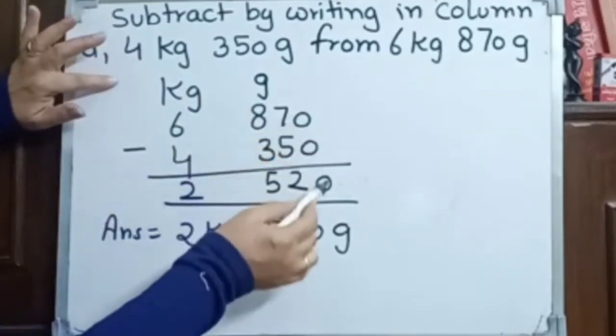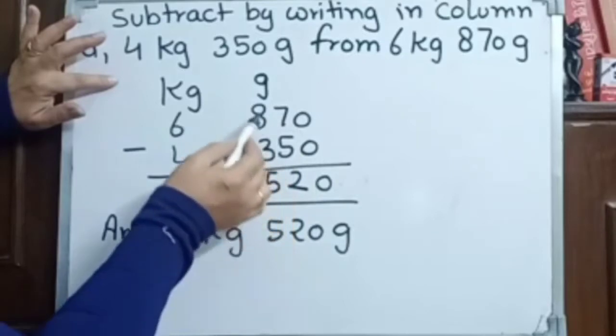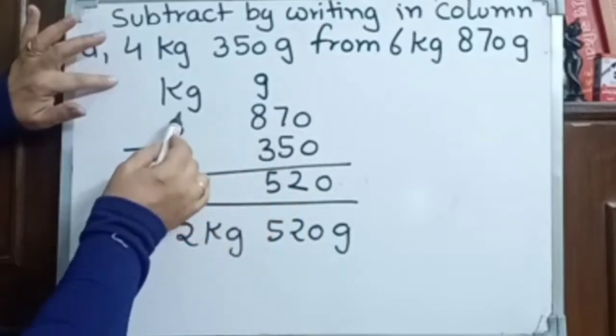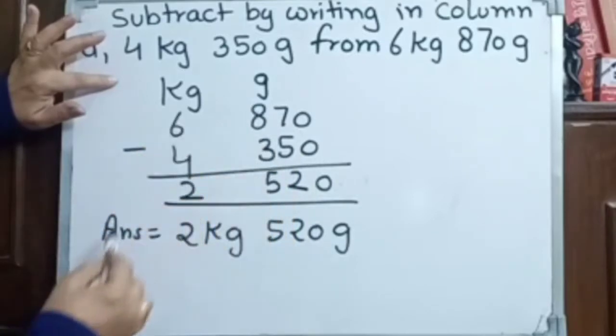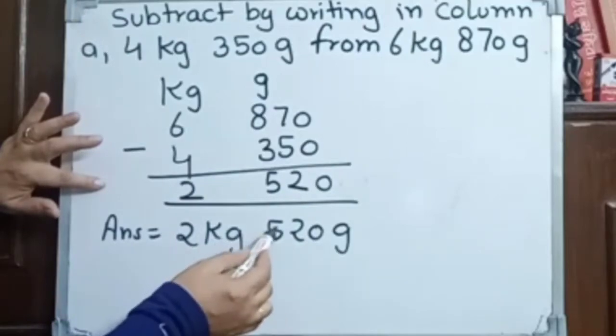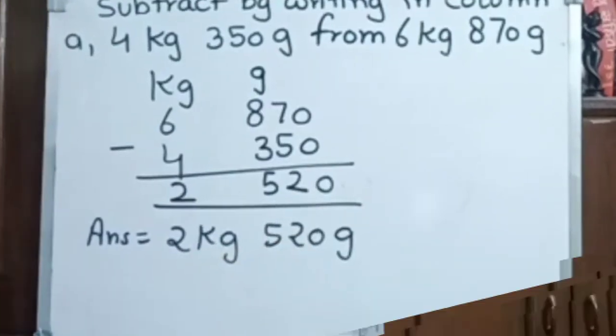The answer: 0, then 7 minus 5 is 2, then 8 minus 3 is 5, then 6 minus 4 is 2. So here we have 2 kilogram 520 grams.